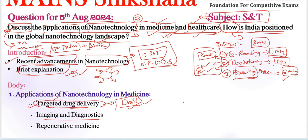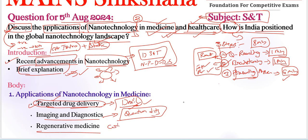Imaging and diagnostics is another important application. Nanotechnology enhances imaging techniques, allowing for earlier detection of diseases. For example, quantum dots are used in imaging to illuminate cancerous cells, providing clearer and more detailed images. Next, regenerative medicine is also very important — carbon nanotubes are utilized in tissue engineering, promoting the growth of new tissues and organs. Research at IIT Bombay involves using carbon nanotubes to support the regeneration of damaged tissues.